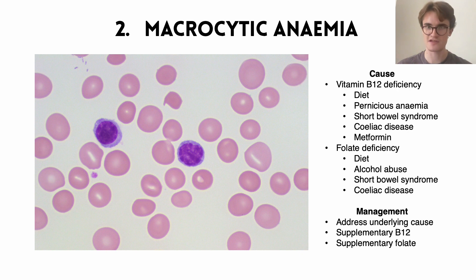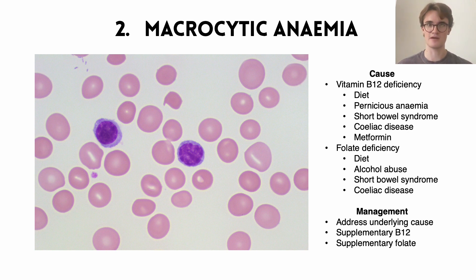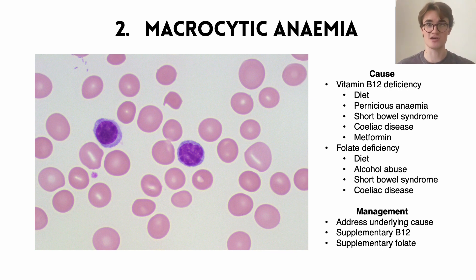For folate deficiency, causes include insufficient folate in the diet, alcohol abuse, short bowel syndrome from Crohn's disease, and celiac disease. To treat macrocytic anemia, we first address the underlying cause — for pernicious anemia we consider supplementary intrinsic factor; for celiac disease we cut out gluten; if metformin is causing it, we consider changing diabetes medications. Alongside that, we can give supplementary B12 and supplementary folate.